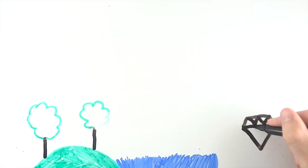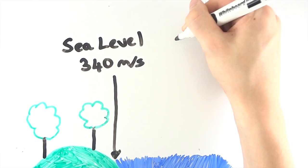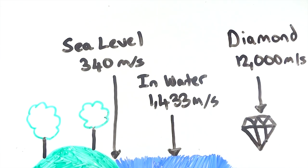On average, the speed of sound at sea level is 340 metres per second. In water it is 1433 metres per second, and in a solid such as diamond the speed of sound is 12,000 metres per second, 35 times faster than the speed of sound in dry air.